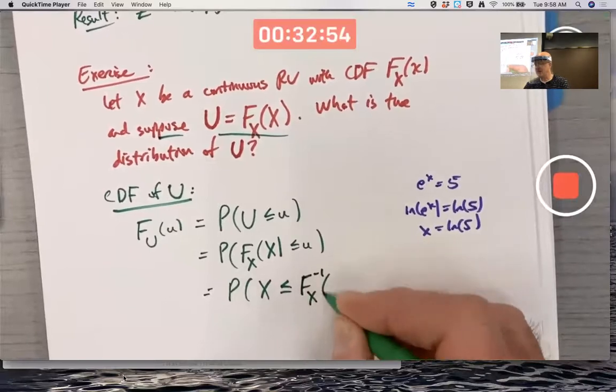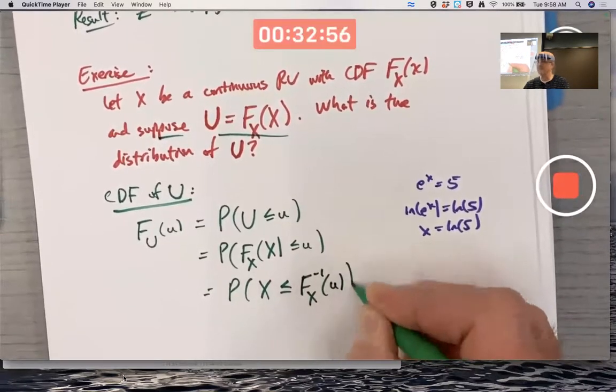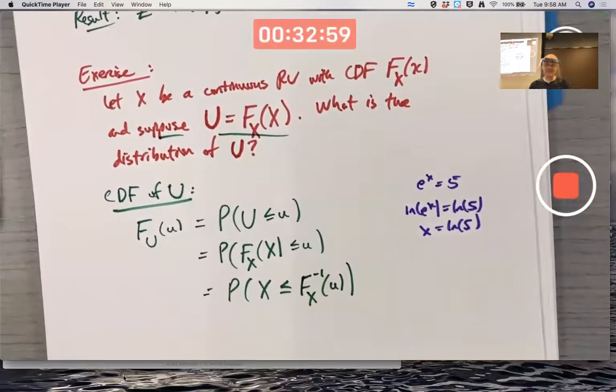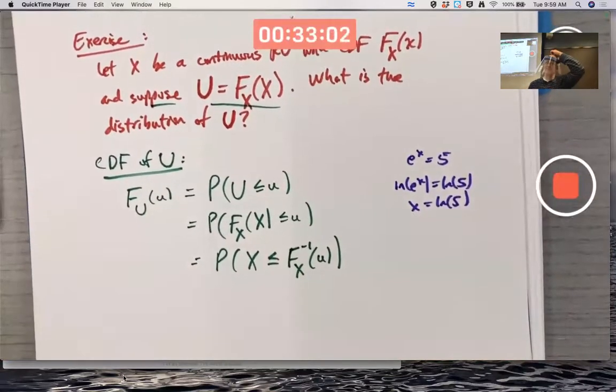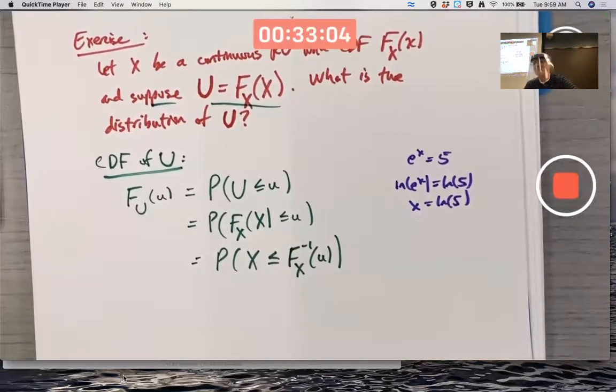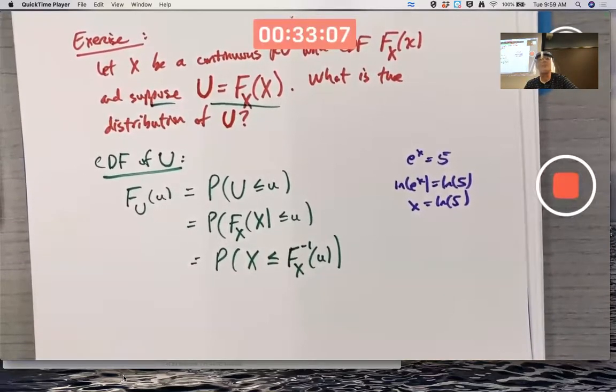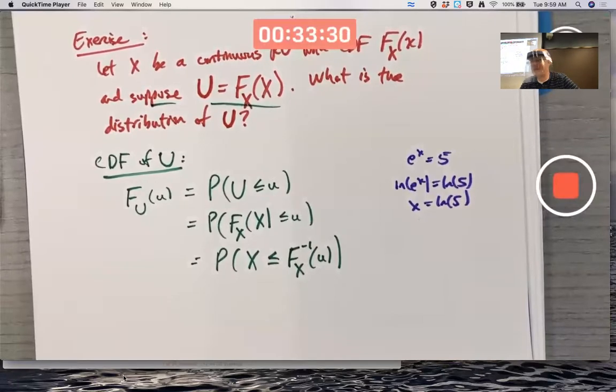But wait a minute, can I really do that? Does F inverse exist? How do I know it exists? Wouldn't capital F sub X have to be one to one? It actually depends on what the CDF is.